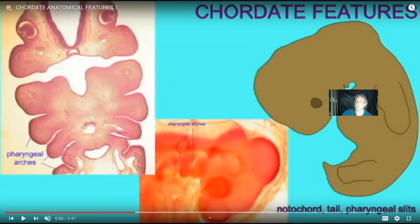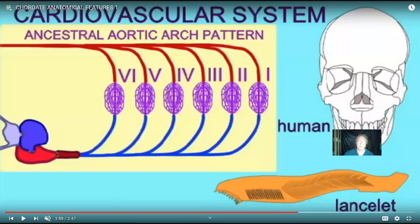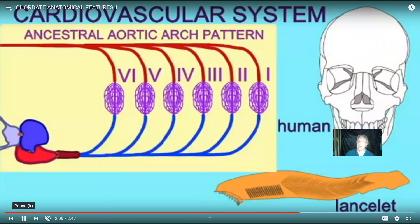Now you might say fish have a throat with slits, but we don't. But we do as embryos, as shown here in a pig, a chicken, and a human. So there are features which chordates share — some of these may not be shared in adults but just in embryos, but nevertheless there are these traits which group us. That is consistent with the predictions of the evolutionary model, but the opposite of what is predicted by the creation model.